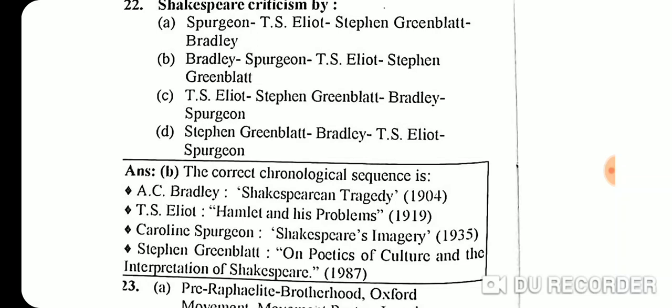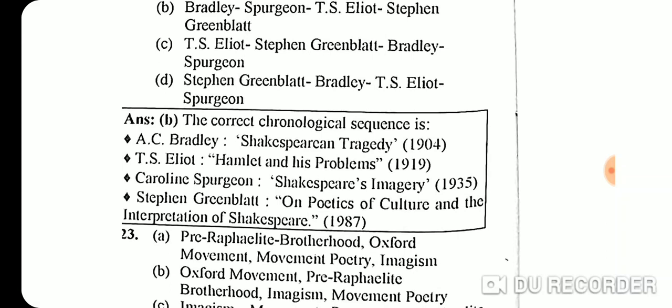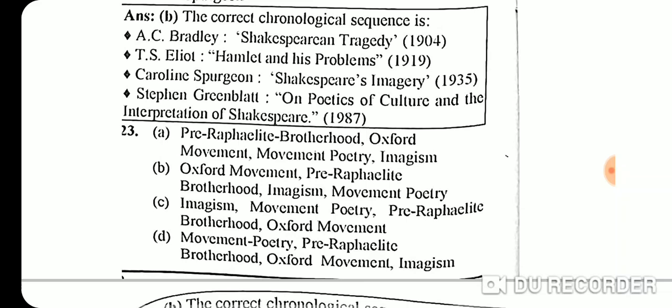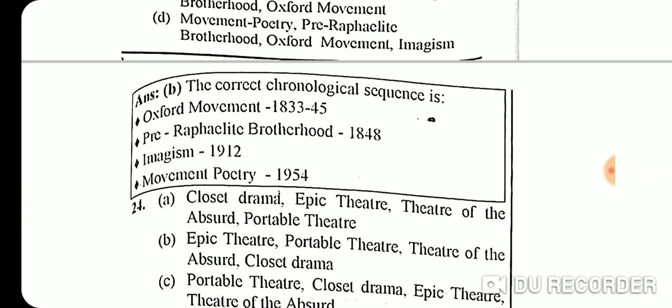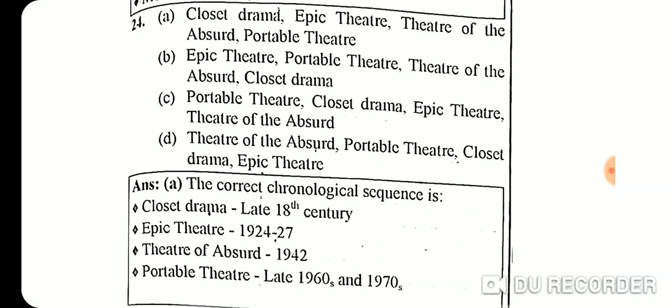Continuing chronological sequences: Stephen Greenblatt's 'On Poetics of Culture and the Interpretation of Shakespeare' (1987). Literary movements in order: Oxford Movement (1833-1845), Pre-Raphaelite Brotherhood (1848), Imagism (1912), and Movement Poetry (1954).